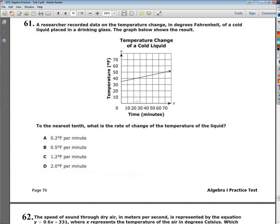Welcome, this is Tennessee End of Course Algebra 1 Practice Test 3 Question 61. The question says a researcher recorded data on the temperature change in degrees Fahrenheit of a cold liquid placed in a drinking glass. The graph below shows the results.